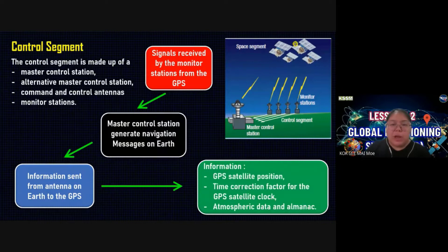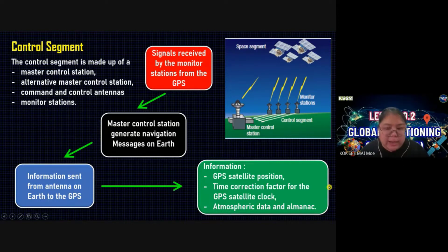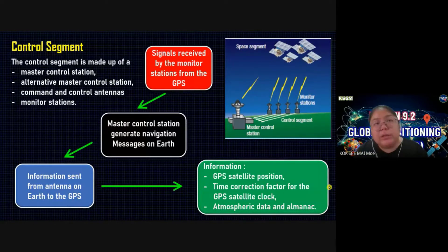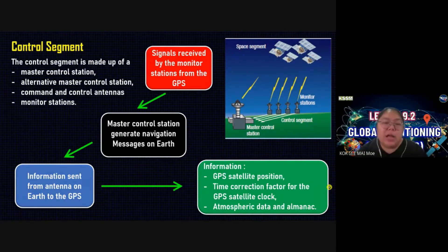So at the space segment, what happens? The GPS satellite position can be determined. You can also find the time correction factor for the GPS satellite clock. After that, you can also get the atmospheric data and harmonic data. All this information you can get from the GPS. So importantly, you must have the control segment. Inside the control segment they call it master control — that means they receive all the signals from the Earth, then through the antenna, and send to the GPS.